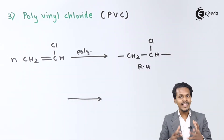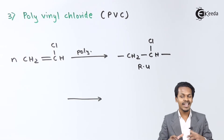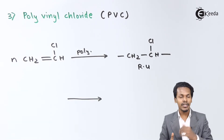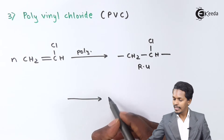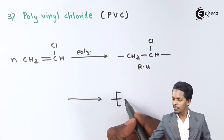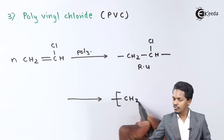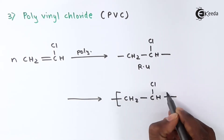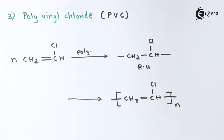Various repeating units combine with each other in this addition reaction. The product we get is –CH2–CHCl– repeated n times, and this product is nothing but PVC — polyvinyl chloride. That was one of the most straightforward examples.